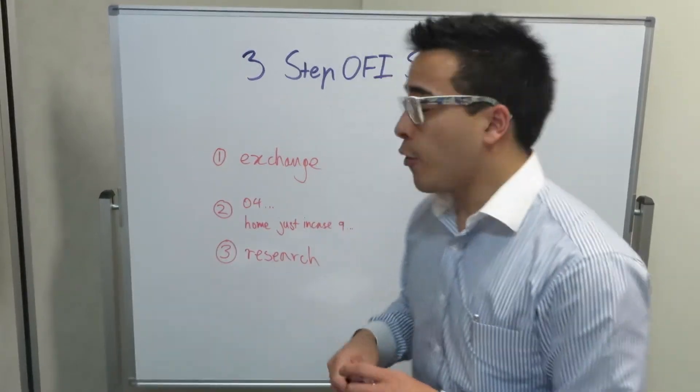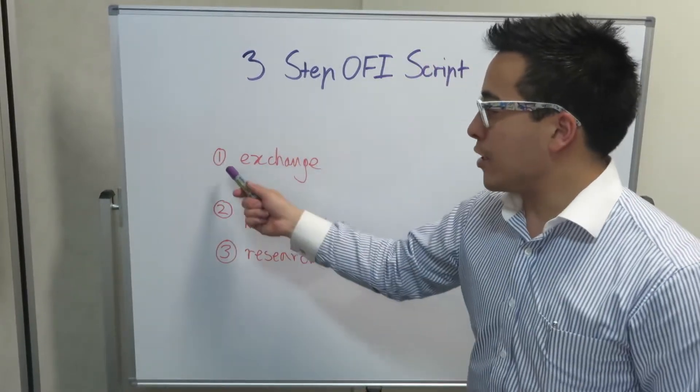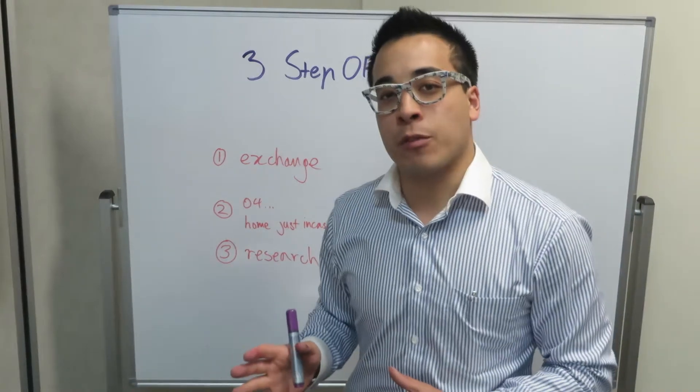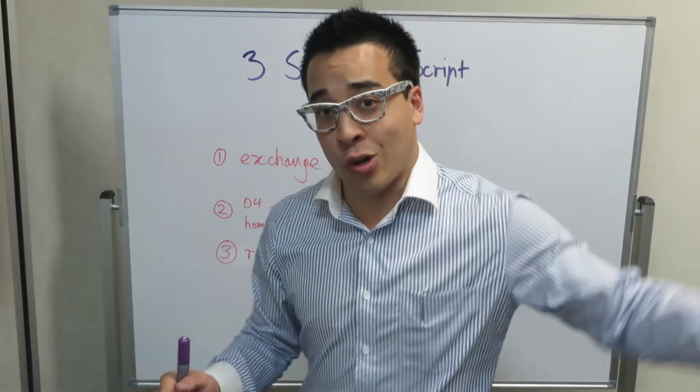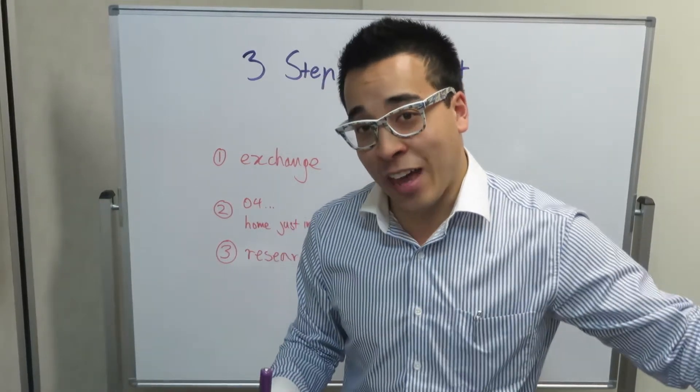Here we go. So first step is what we call the exchange. Before you get something from someone, it's important to give them something. So they're walking up the driveway, and you're in front of the house.